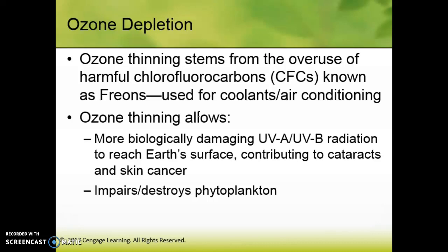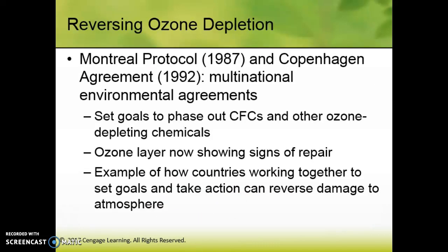Ozone thinning allows more UV radiation to reach the Earth's surface — it increases skin cancer rates, increases cataract issues in eyes, and impairs and destroys phytoplankton. So beyond the human-centric concern of skin cancer, it also damages something at the base of many marine food chains, which is troublesome. In 1987, the Montreal Protocol was established, followed by the Copenhagen Agreement in 1992 — both set goals to phase out CFCs and other ozone-depleting chemicals. In the last 10 to 15 years, the ozone layer has started to fill back in. This is a great example of how countries can work together, and it's kind of the basis for the Paris Climate Agreement.